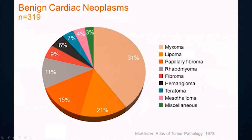Moving on to benign cardiac tumors — this pie chart from the Atlas of Tumor Pathology, published in 1978 by McAllister, shows the distribution. The most common cardiac tumor is the cardiac myxoma, followed by lipoma, papillary fibroelastoma, and rhabdomyoma. Other subtypes including fibroma and hemangioma are under 10%. Myxoma is going to be your most common by far.